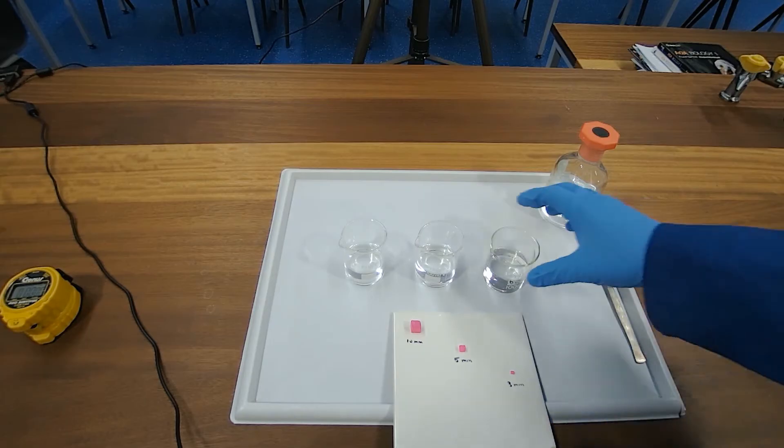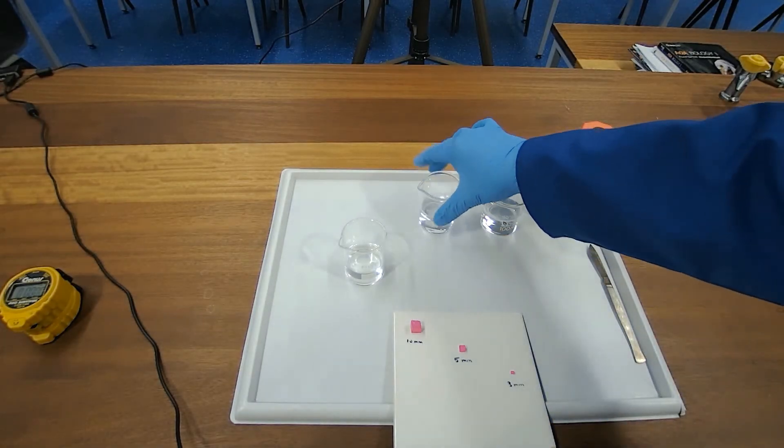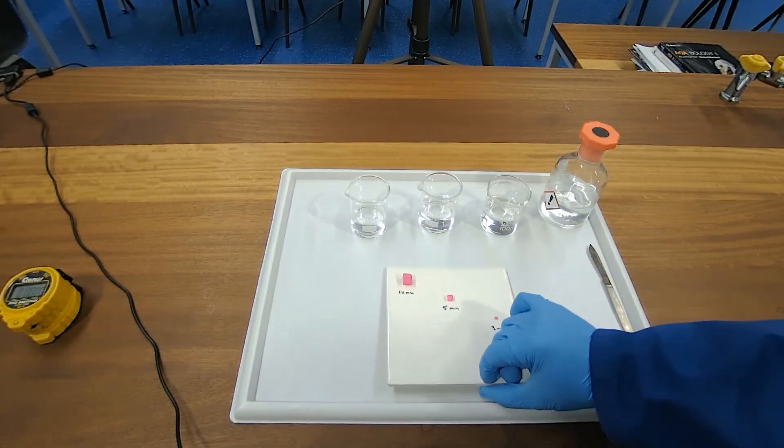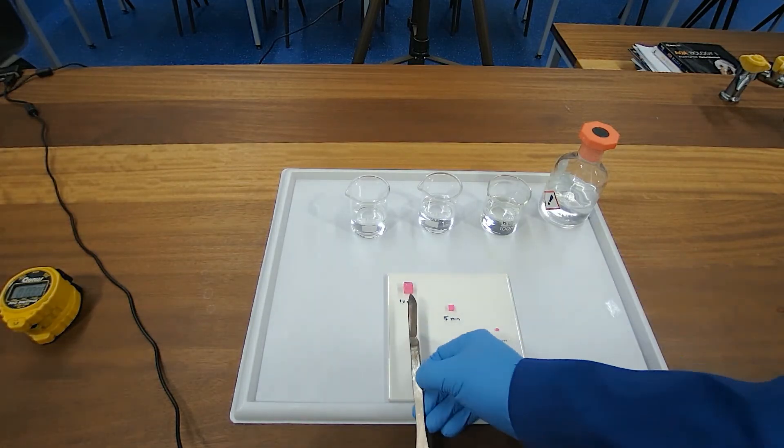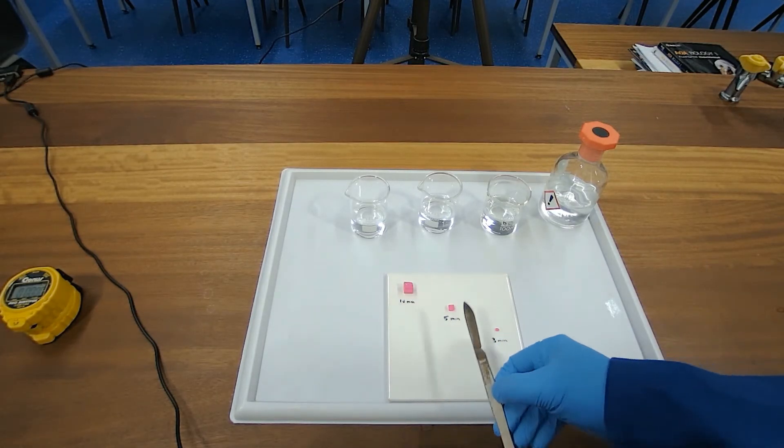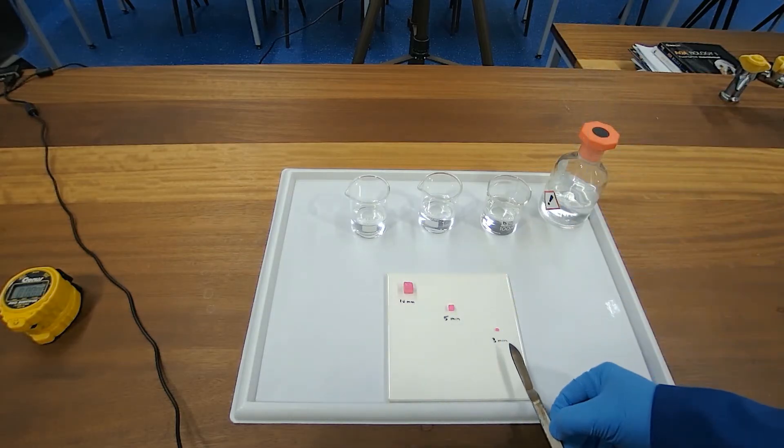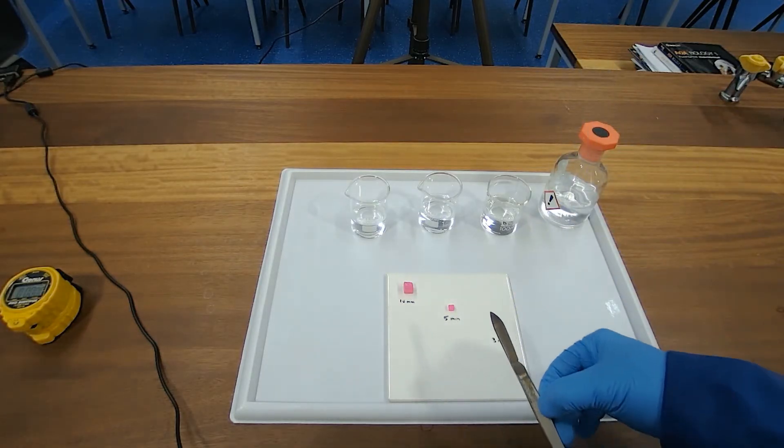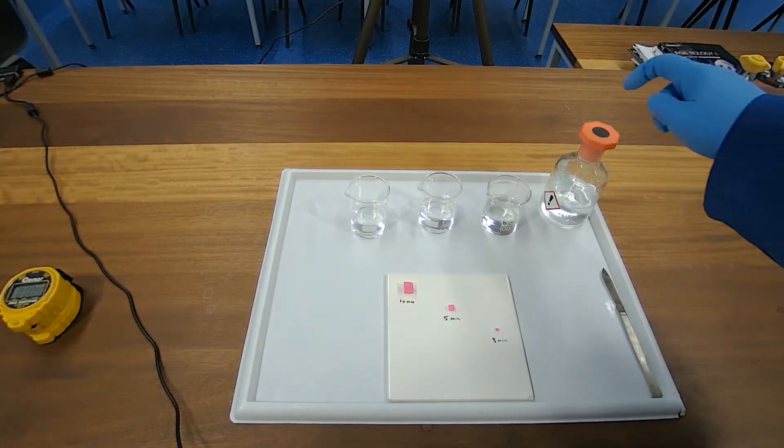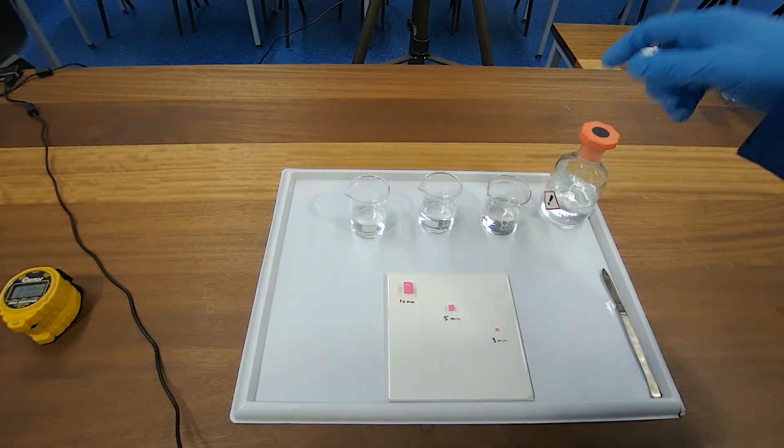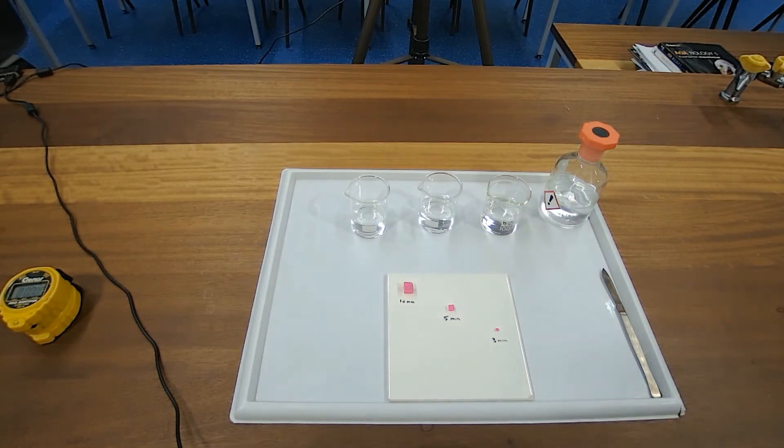Here I've pre-prepared three different sizes of cubes. As you can see, we have a 10 millimeter by 10 millimeter by 10 millimeter cube, 5 millimeter cubes, and 3 millimeter cubes here. We're going to put each into equal volumes of hydrochloric acid, and then we're going to time how long it takes for the entire block to turn clear.